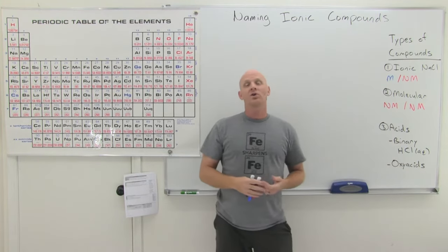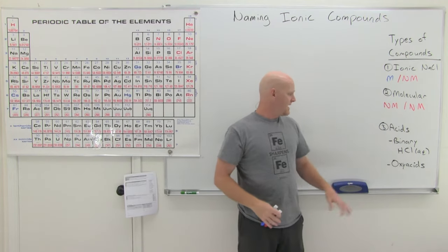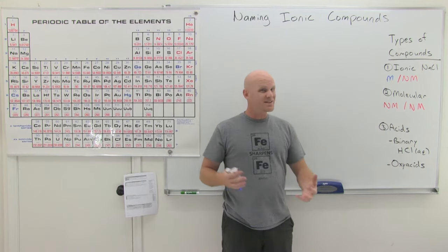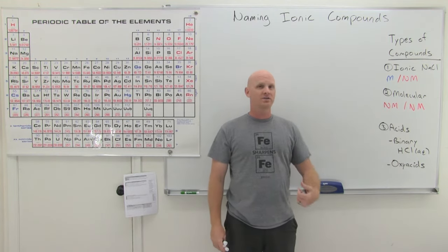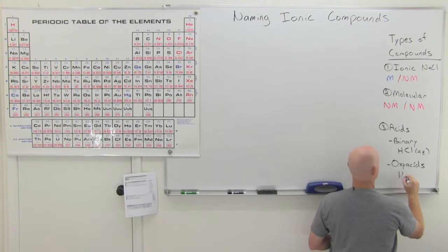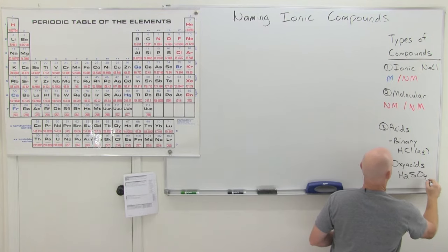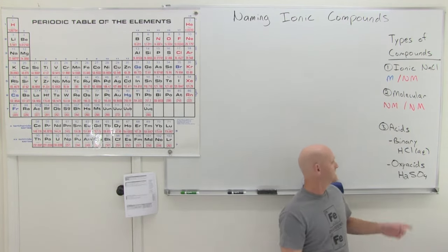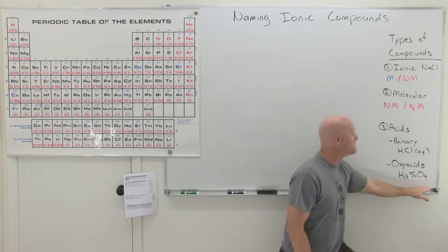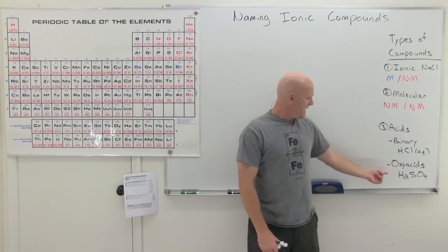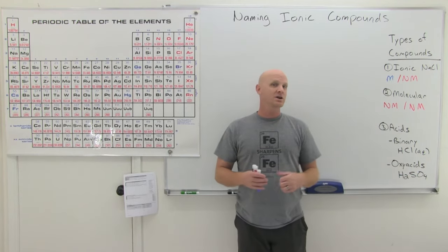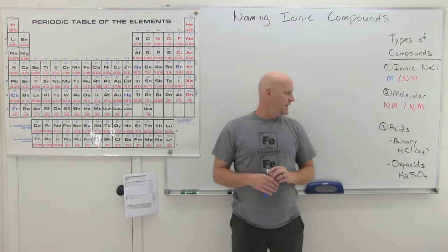You could name HCl either as a molecular compound or as a binary acid depending on whether it's dissolved in water. The second type of acid is called oxyacids or oxoacids. These are acids where the corresponding anion contains polyatomic oxy-anions. A good example is sulfuric acid, H2SO4, which is the acid of the sulfate ion. It is still molecular — all non-metals — but it has hydrogens and one of the polyatomic anions.